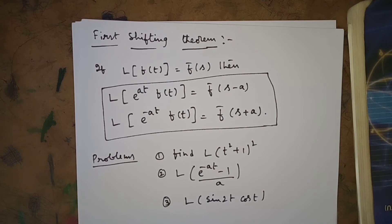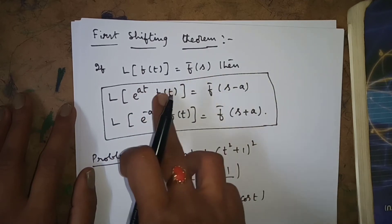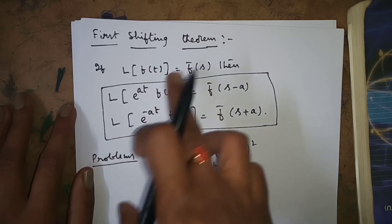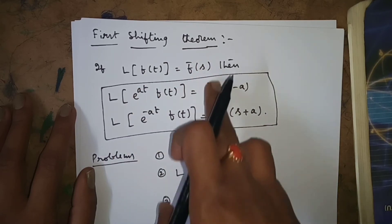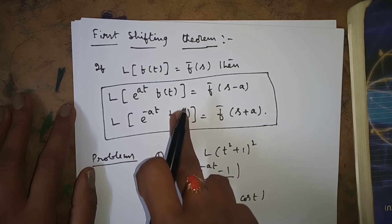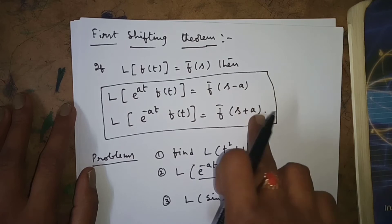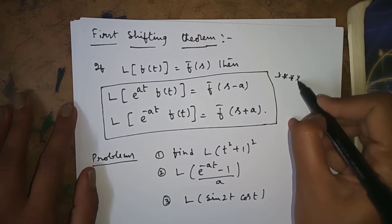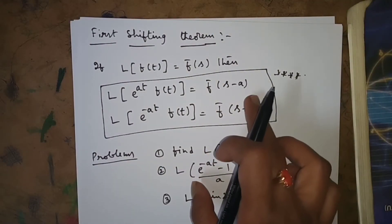The next topic is the first shifting theorem. If L{f(t)} = f̄(s), then if we multiply f(t) by e^(at) inside the bracket, in the answer wherever s appears, replace s with s−a. If we multiply by e^(−at), replace s with s+a. This is the first shifting theorem — very important.